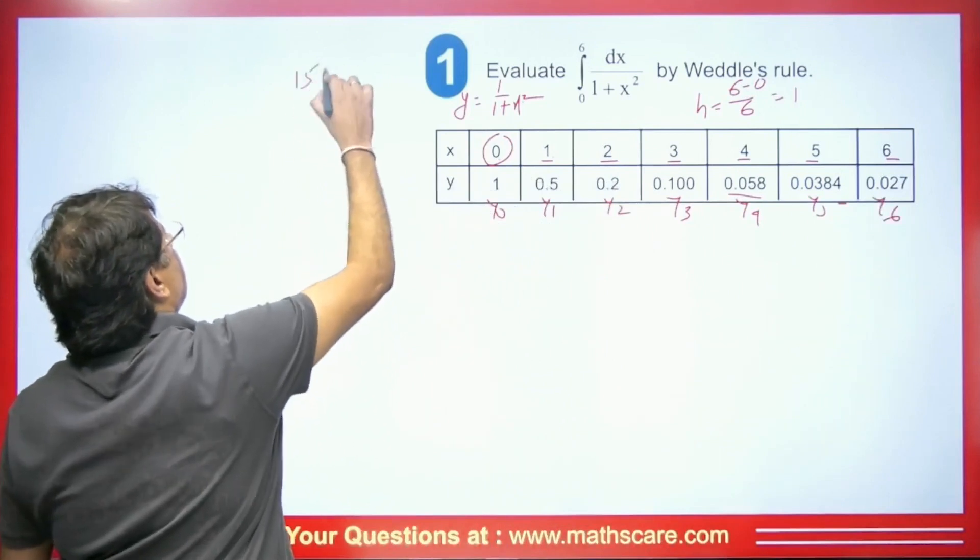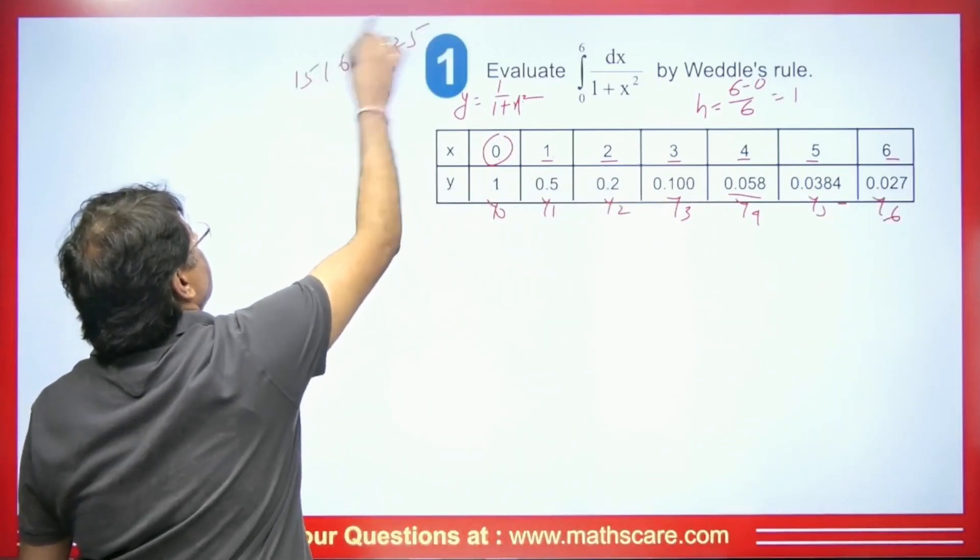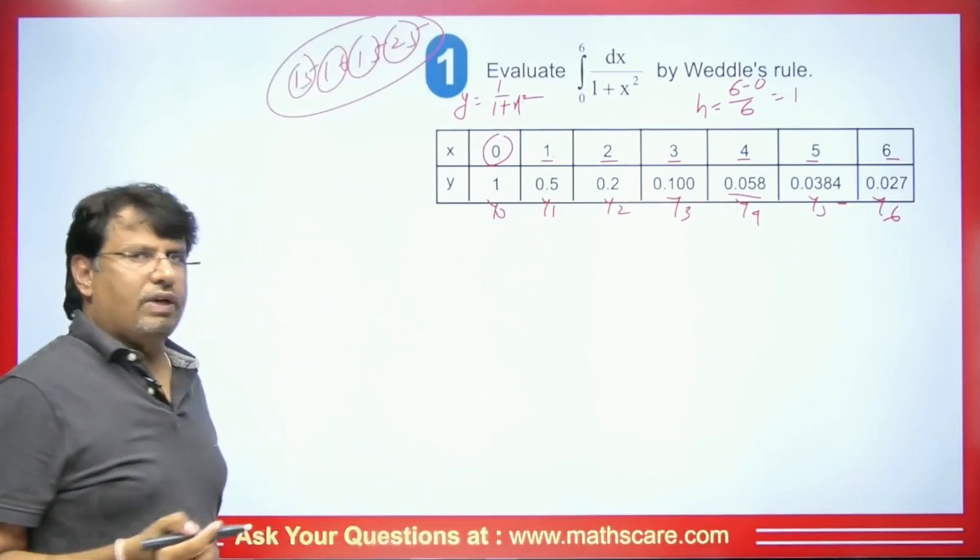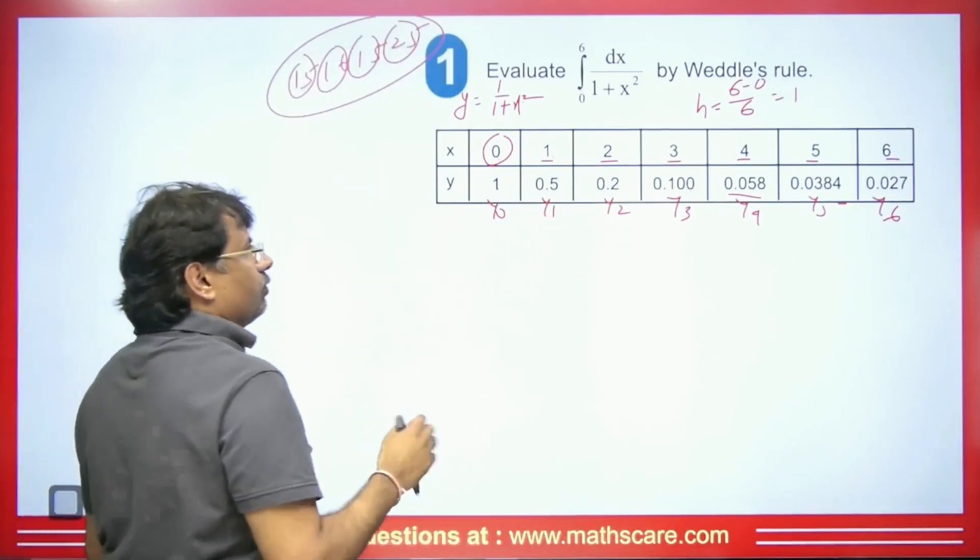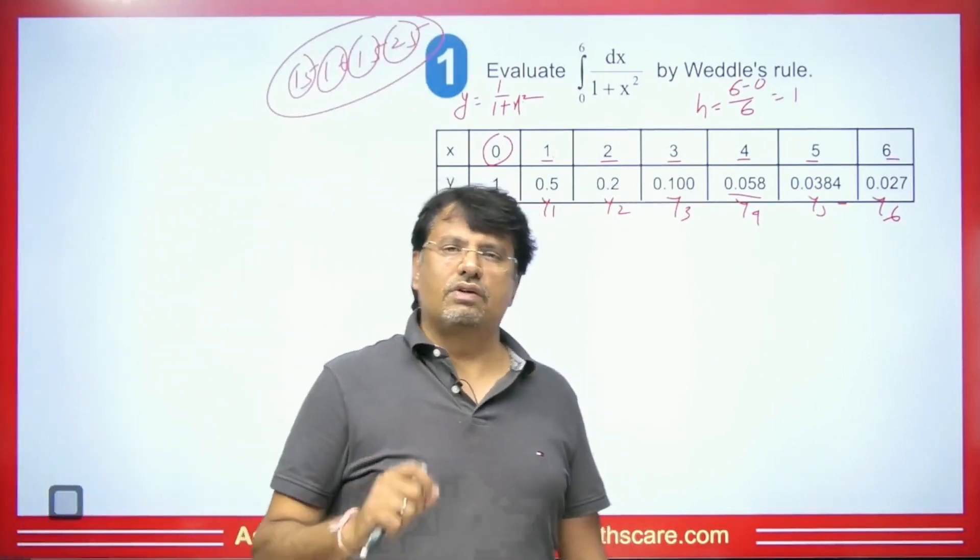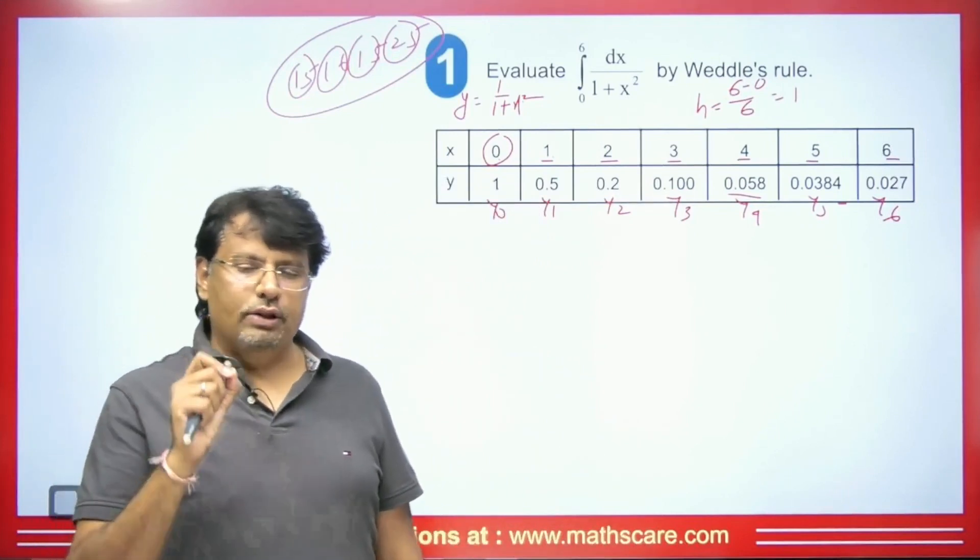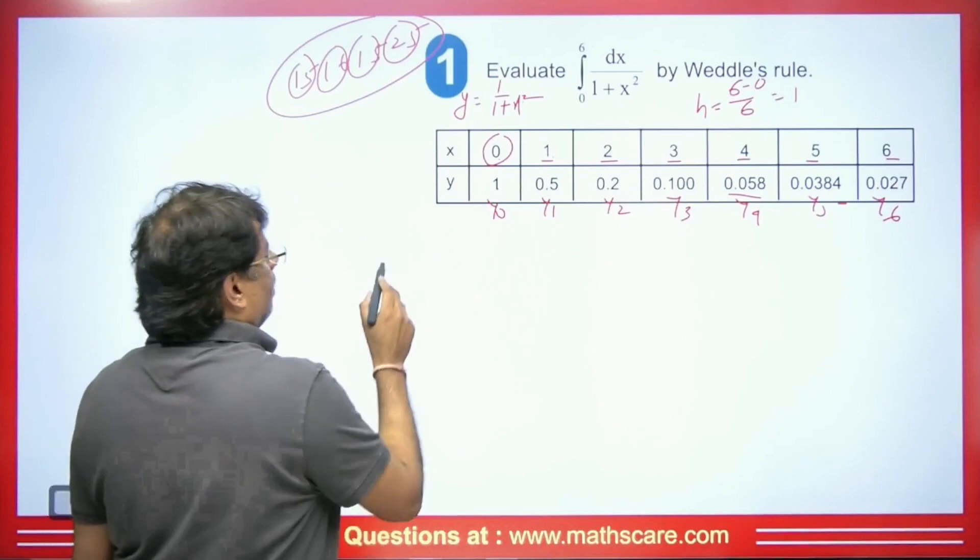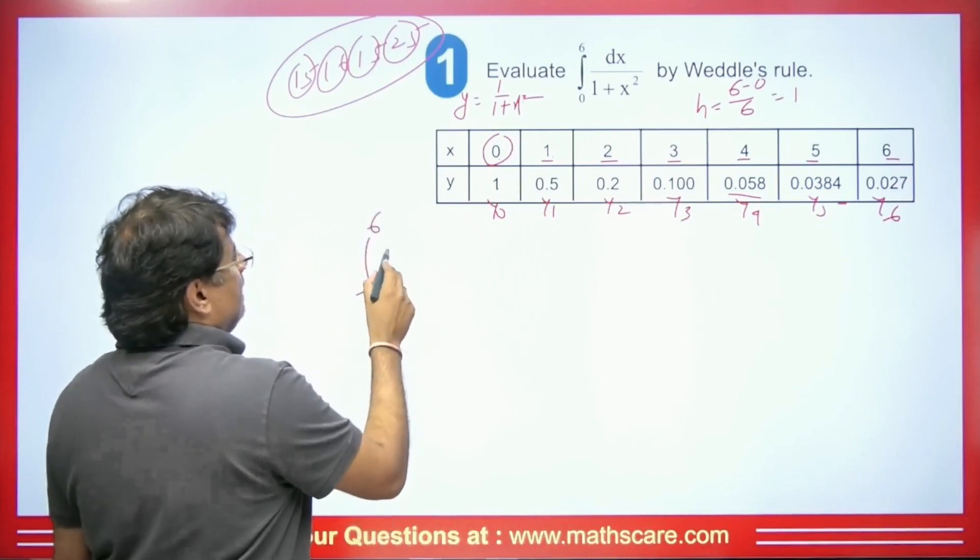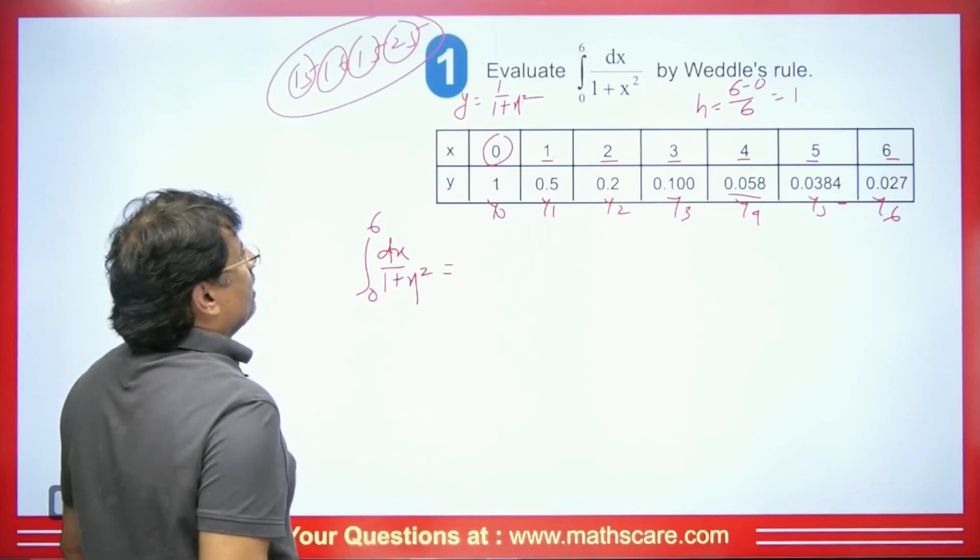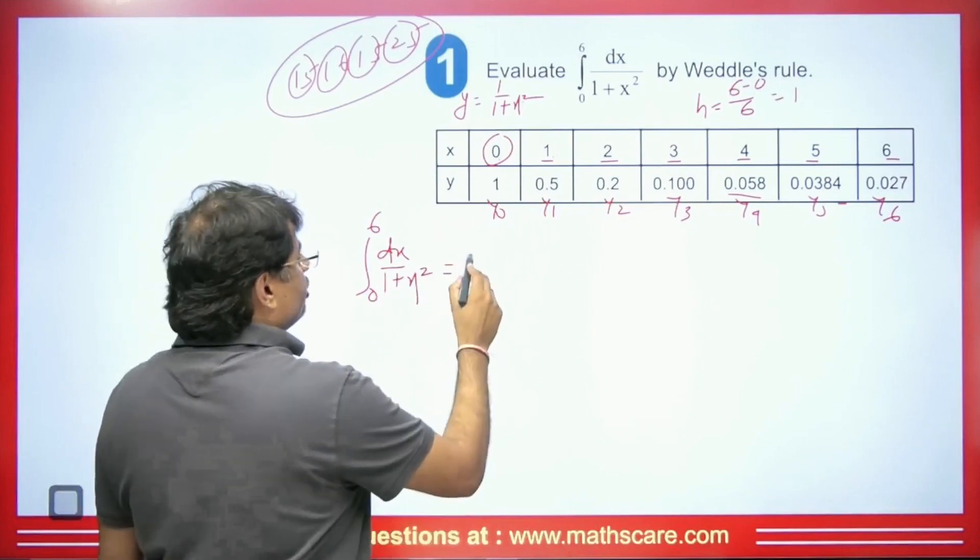Now, as I told you earlier, 15, 16, 15, 25. So remember this 15, 16, 15, 25. Remember the formula this way. In exam, you will be asked to use Weddle's rule to find the value of this integration. And you have to use this only when you are asked in the exam. Therefore, we will have here ∫₀⁶ dx/(1+x²), and this will give 3h/10.